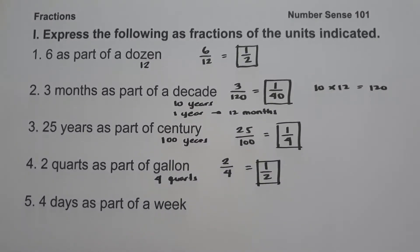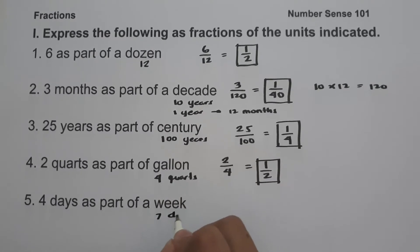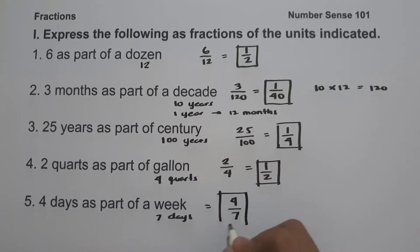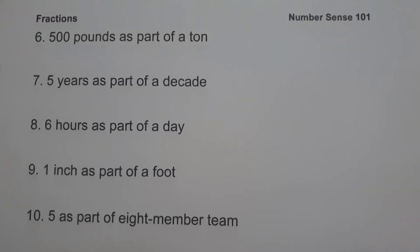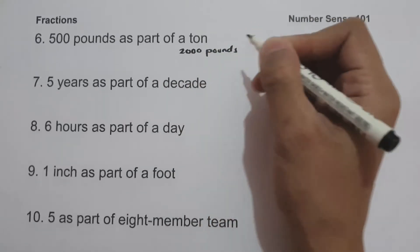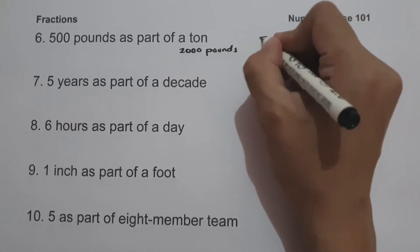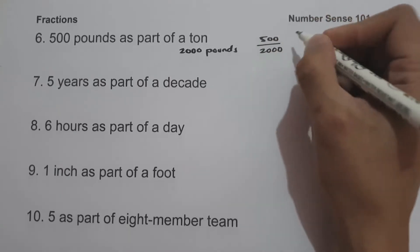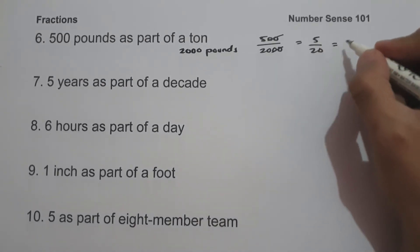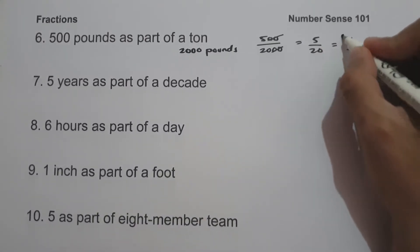On number 5, we have 4 days as part of a week. A week is 7 days, so this is 4 over 7. On number 6, we have 5 pounds as part of a ton. A ton is 2,000 pounds, so the fraction is 500 over 2,000. Cancelling the zeros gives 5 over 20, and since 5 and 20 are divisible by 5, this simplifies to 1 over 4.